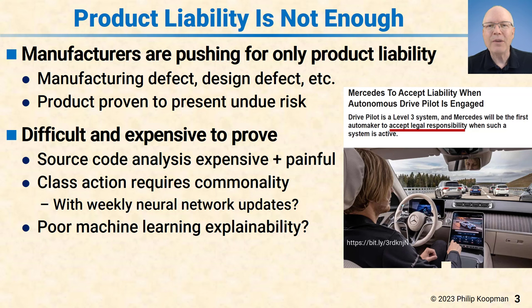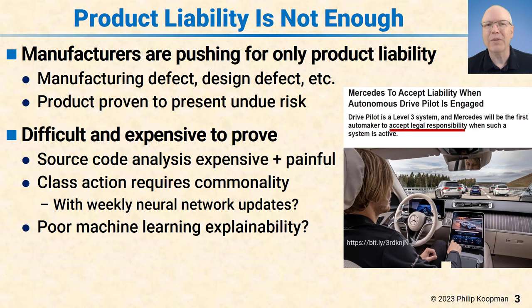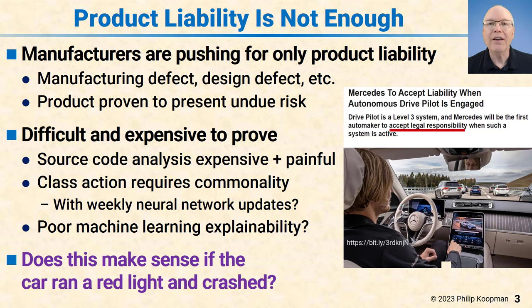All those class action cars have to be the same somehow. And this goes beyond Mercedes — this applies to any level-three vehicle. If a company is updating their neural network software every week, you have to prove that 10, 20, 30, 200 weeks of cars — all with slightly different software — are all the same car for a class action. And even if you can do that, how exactly do you reverse engineer what's in a neural net to prove it's a software defect, a training defect, or a bias in the training data? This is pretty new ground for product liability, and it's really unclear how it will turn out other than it'll be very expensive. The reality is there are plenty of crashes where product liability just doesn't make sense.